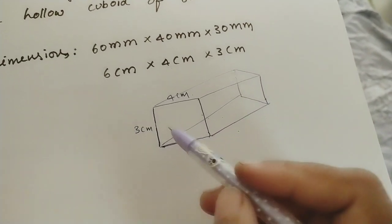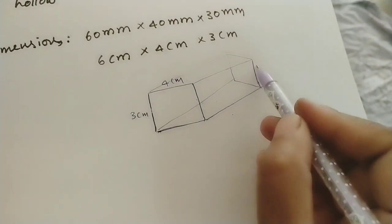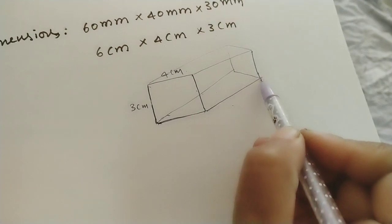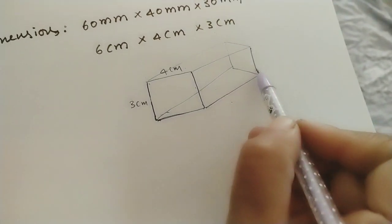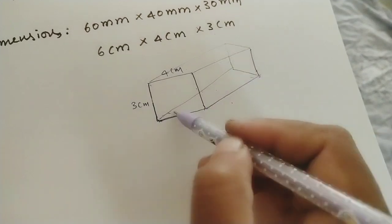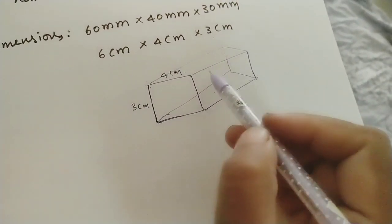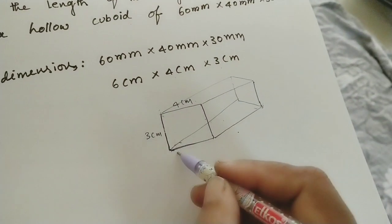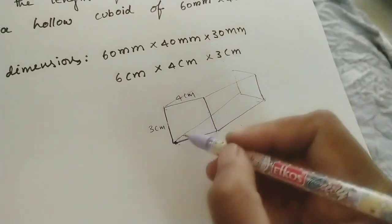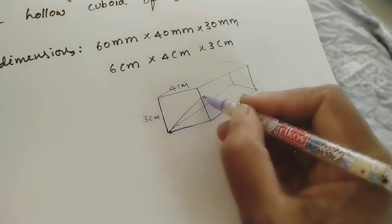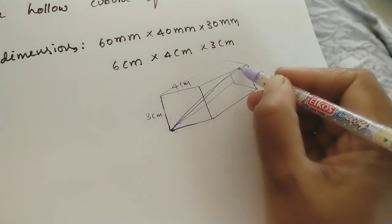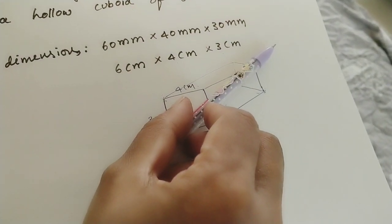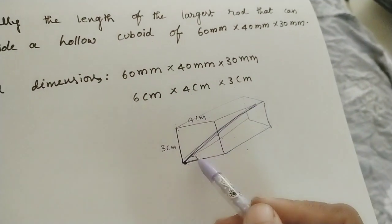If you are keeping one rod from this corner to the opposite corner, it is the longest length. This one is also the longest length — both diagonals are the same length because this is a cuboid. Whatever this side diagonal, the same length of diagonal is coming on the other side. Let us take we are keeping a rod from one corner to the opposite corner — just like a straight line. This is the largest length of the rod, and here we have to find this length.